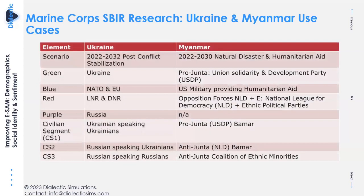The second scenario we tested was the Myanmar Civil War, under a context of a humanitarian intervention in 2029 after a tsunami and earthquake. The question is: what would forces face during a humanitarian mission nine years from now, so they can understand what they need to prepare? The two sides are the pro-Junta-Barma majority and the anti-Junta, plus a Coalition of Ethnic Minorities. We took these different use cases in different regions and contexts to ask: can we bring real data into this model to instantiate these conflicts?